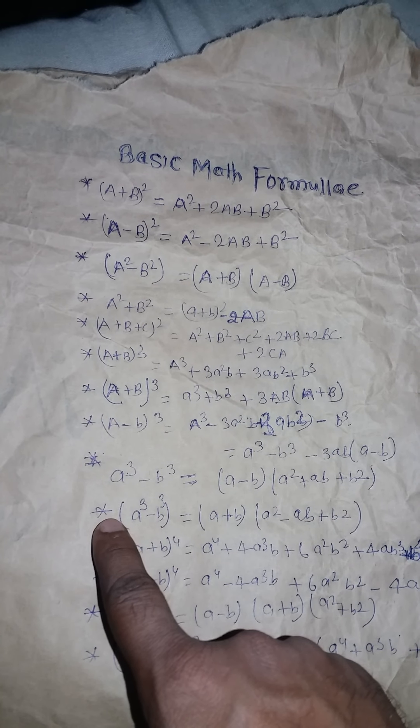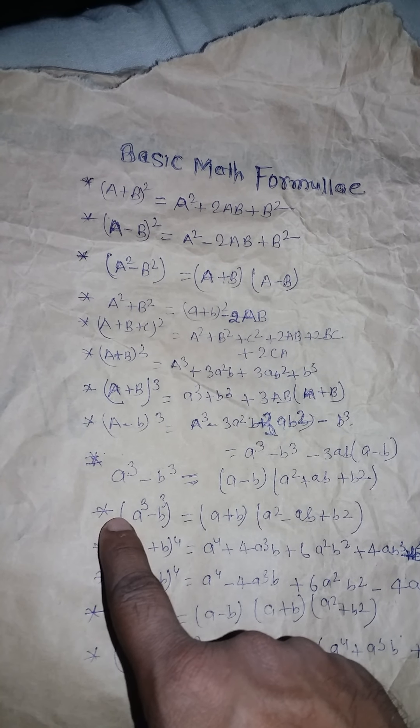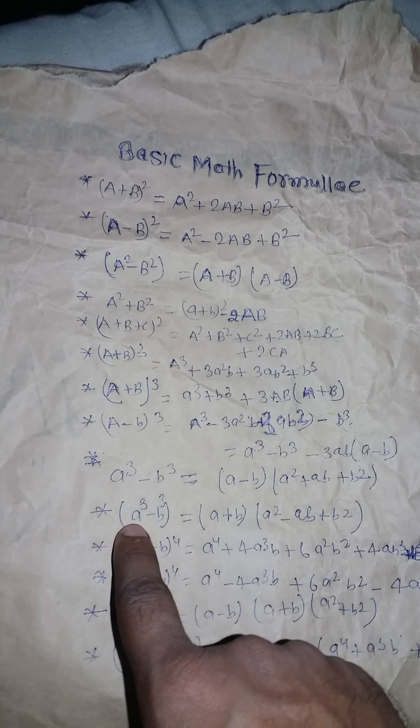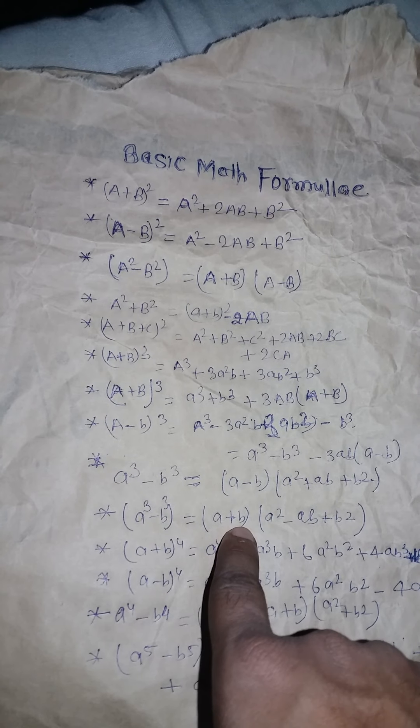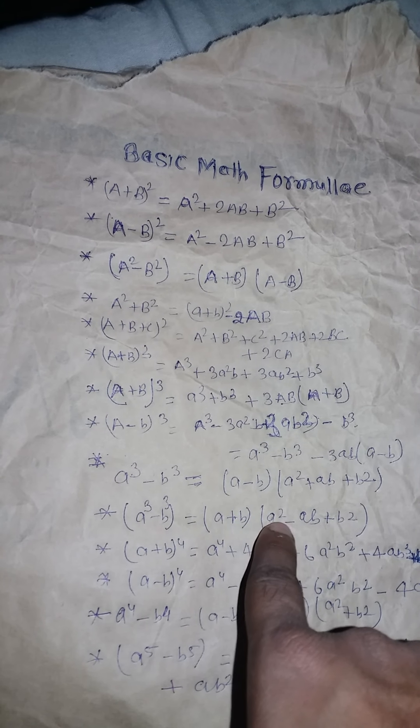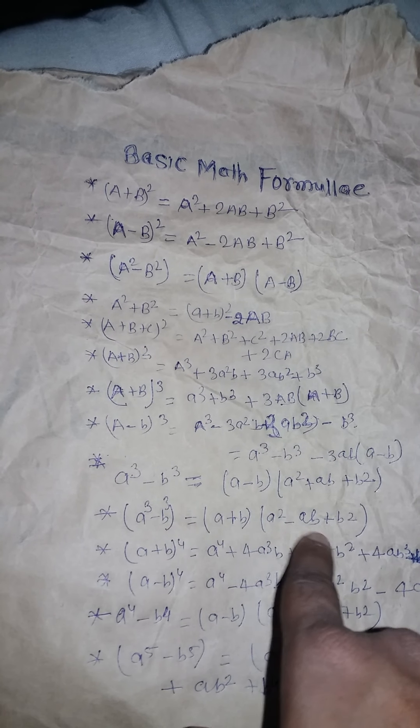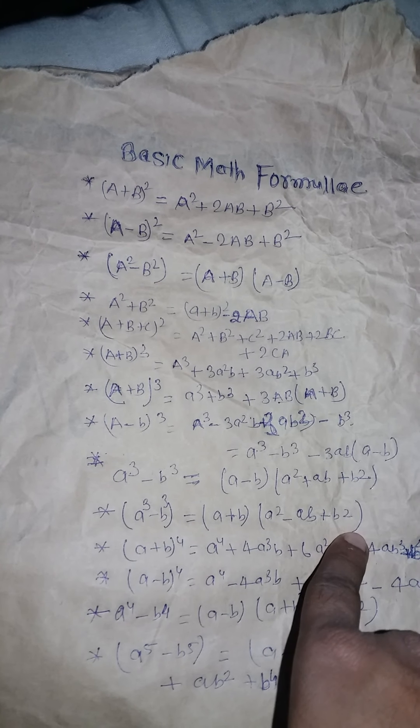Next one: a cube plus b cube is equal to a plus b into a square minus ab plus b square.